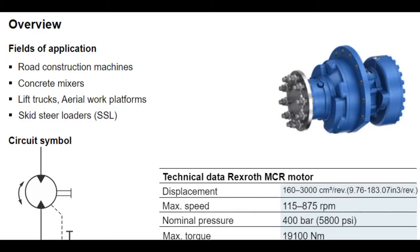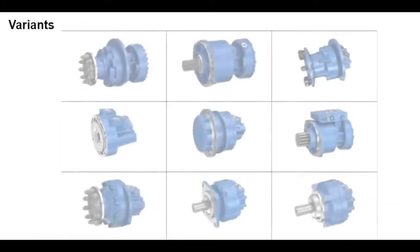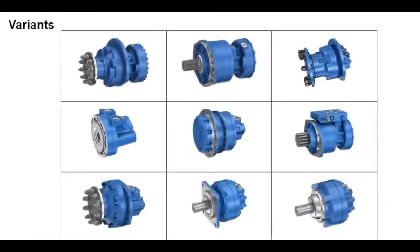MCR radial piston motors can output a maximum torque of up to 19,100 newton meters, depending on size. MCR radial piston motors come in different models that differ primarily in the mounting flange or housing. These allow a wide variety of radial piston motors to be produced easily, which can then be used for special applications.